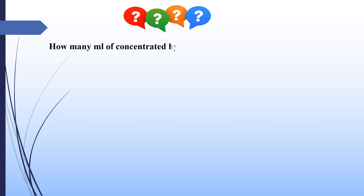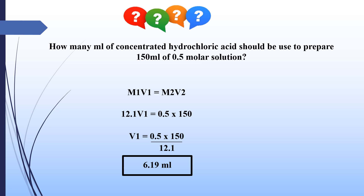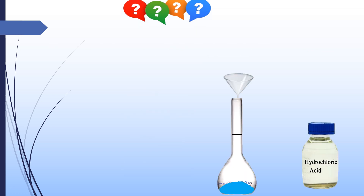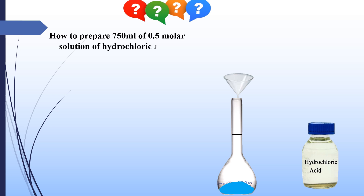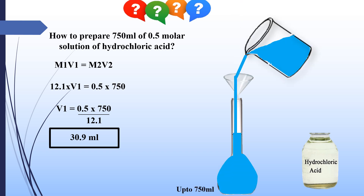Can you prepare these solutions of hydrochloric acid now? How many ml of concentrated hydrochloric acid should be used to prepare 150 milliliters of 0.5 molar solution? The answer is 6.19 milliliters. How to prepare 750 milliliters of 0.5 molar solution of hydrochloric acid? Take 30.9 milliliters of concentrated hydrochloric acid with a pipette into a 750 milliliter flask having a little water in it, and dilute the solution up to the mark. This will be 750 milliliters of 0.5 molar solution of hydrochloric acid.